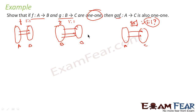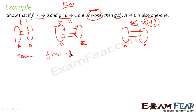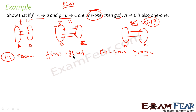I have to prove that gof is one-one. Remember what we said: to prove a function is one-one, we assume f(x₁) = f(x₂) and then prove that x₁ = x₂. If you do this, then the function is one-one. So to prove gof is one-one, we assume gof(x₁) = gof(x₂) and then prove x₁ = x₂.